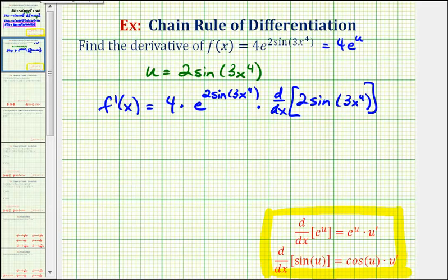What's more challenging about this example is that two sine of three x to the fourth is also a composite function, so we have to apply the chain rule again in order to find this derivative. We should recognize that three x to the fourth is going to be the inner function, and since we've already used u, let's go ahead and let this equal v.